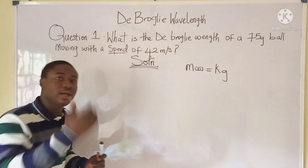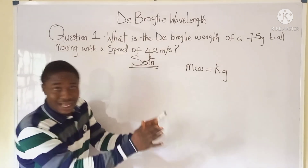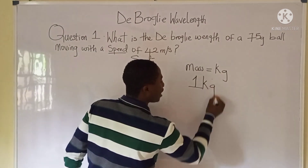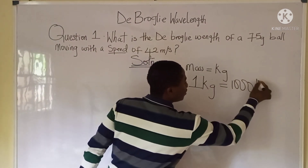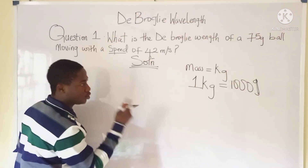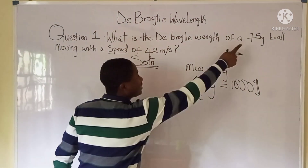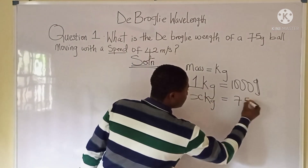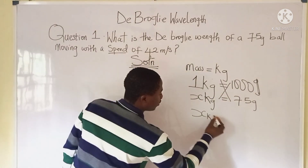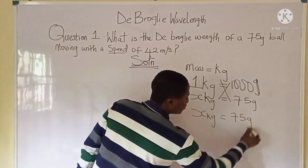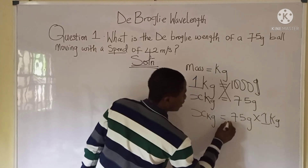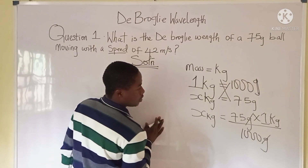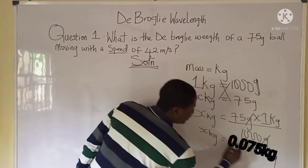To convert mass from grams to kilograms, recall the conversion factor: 1 kilogram equals 1000 grams. So converting 75 grams to kilograms, we set up x kilograms equals 75 grams divided by 1000 grams, and grams cancels grams, giving us 0.075 kilograms.